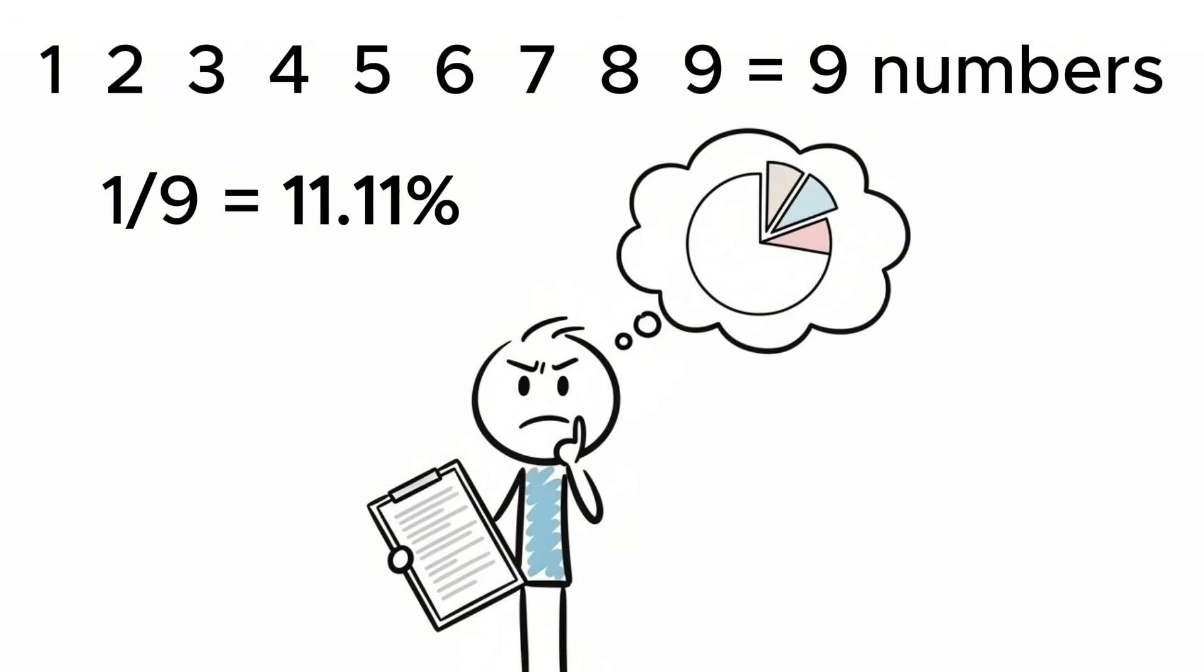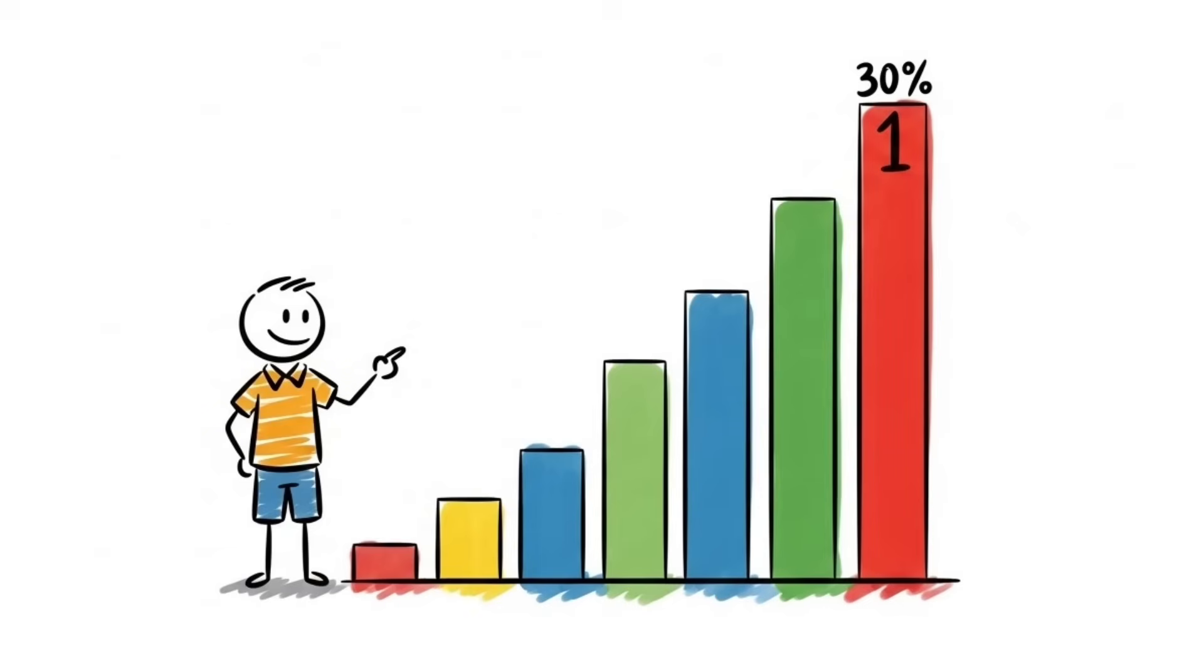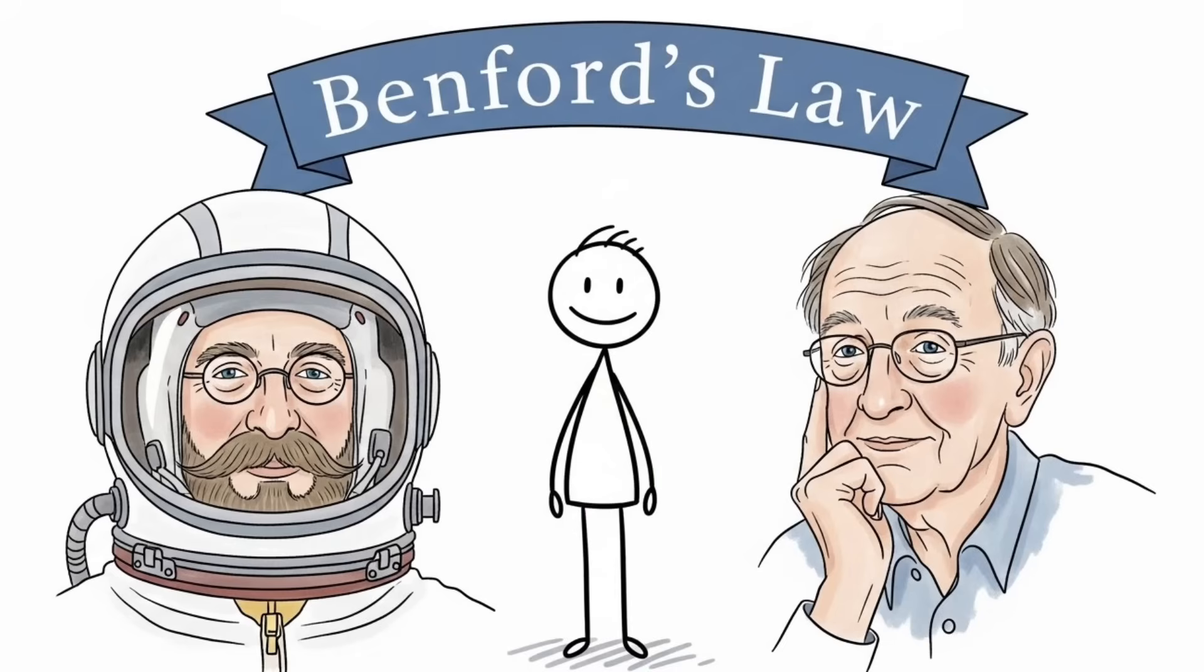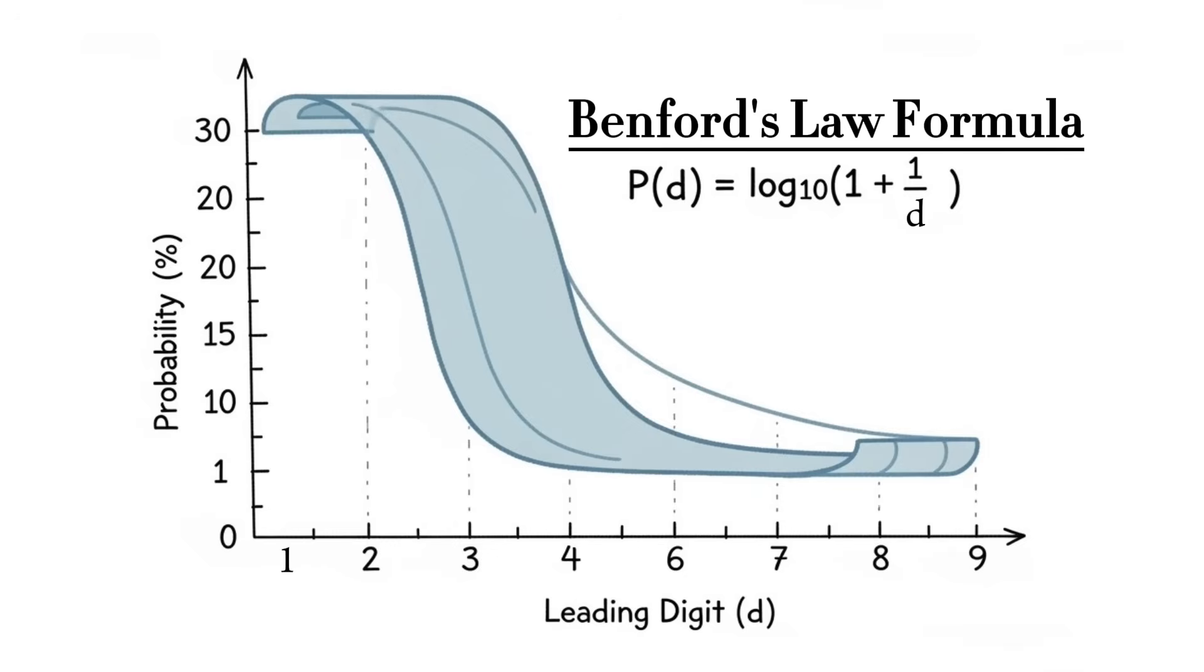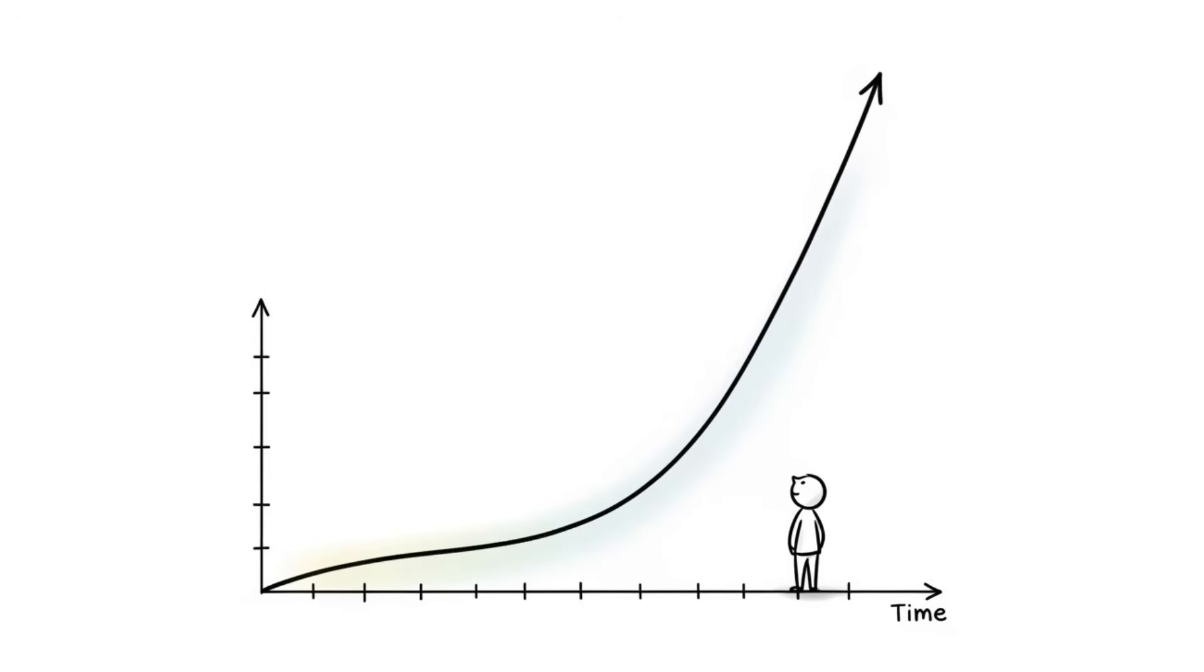You'd might think each digit from one to nine has an equal chance to appear first, but it turns out the number one appears almost 30% of the time. The number two shows up about 18%. By the time you get to nine, it's down to less than 5%. This is Benford's law, discovered by astronomer Simon Newcomb in 1881, and rediscovered by physicist Frank Benford in 1938. The formula is logarithmic, which means the probability of digit D appearing first is log base 10 of one plus one over D.